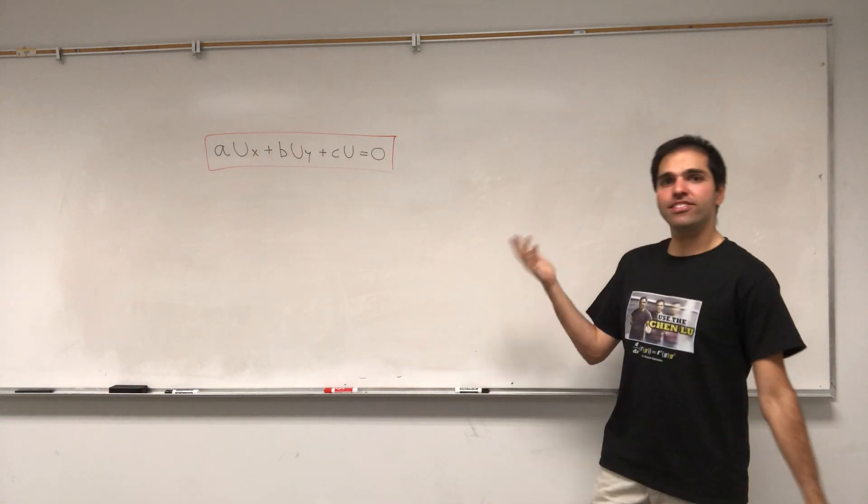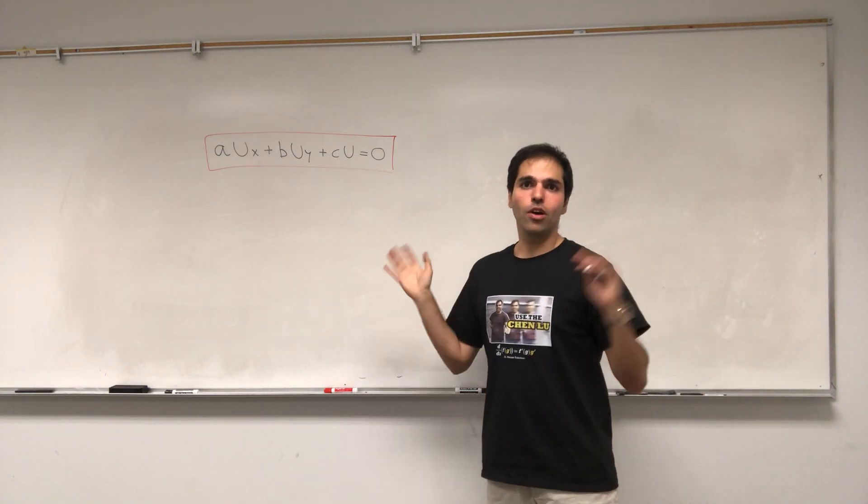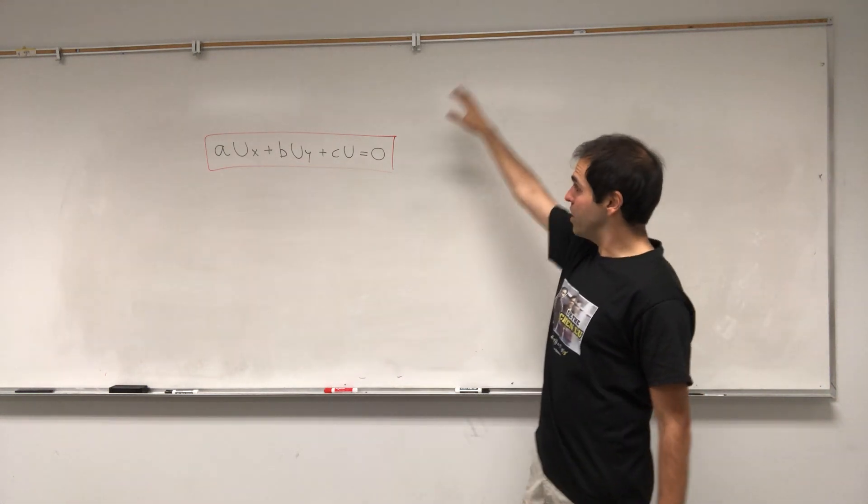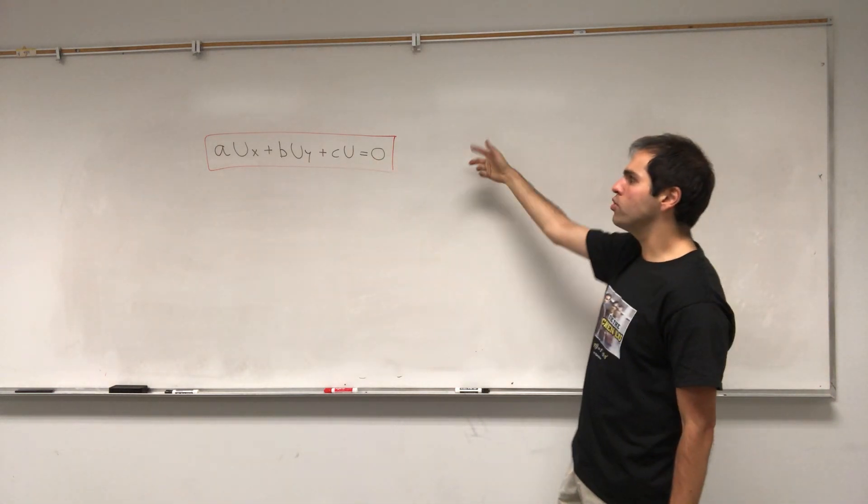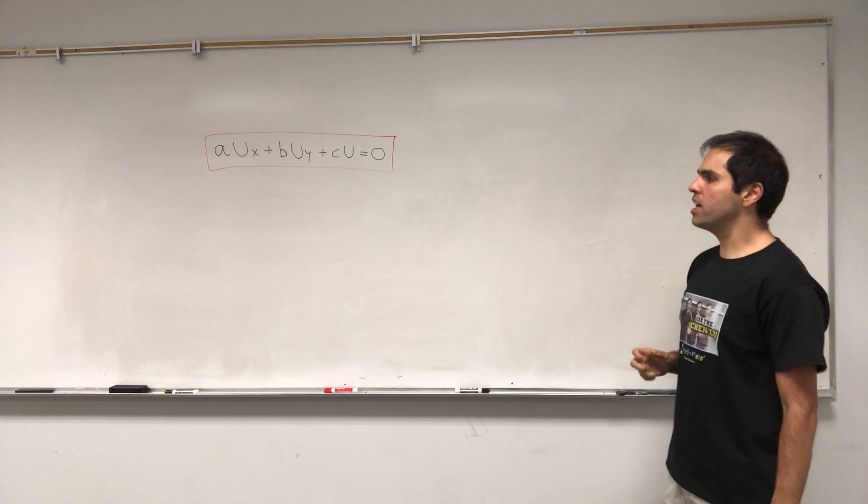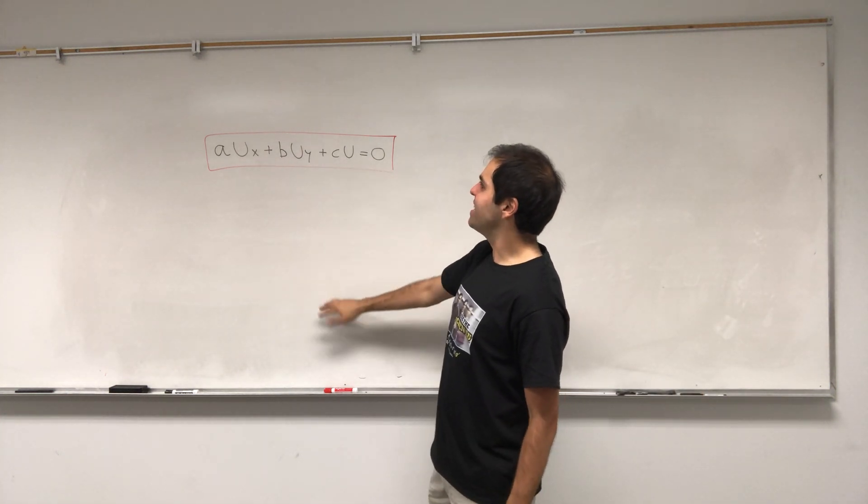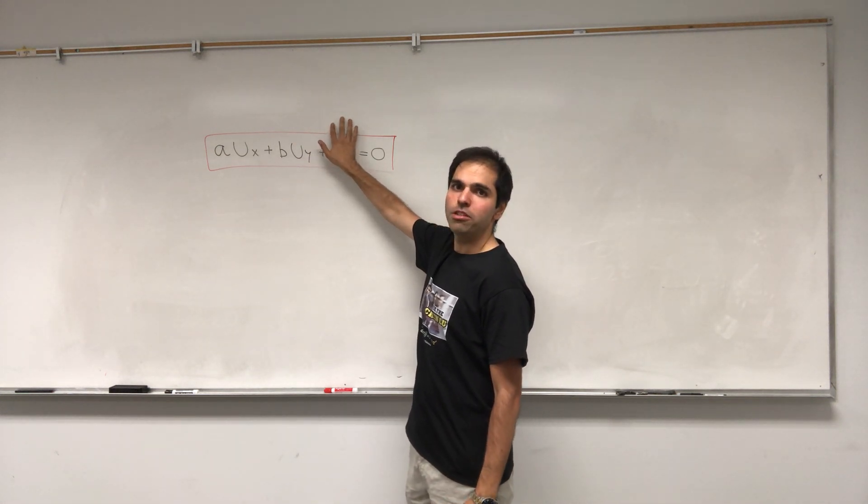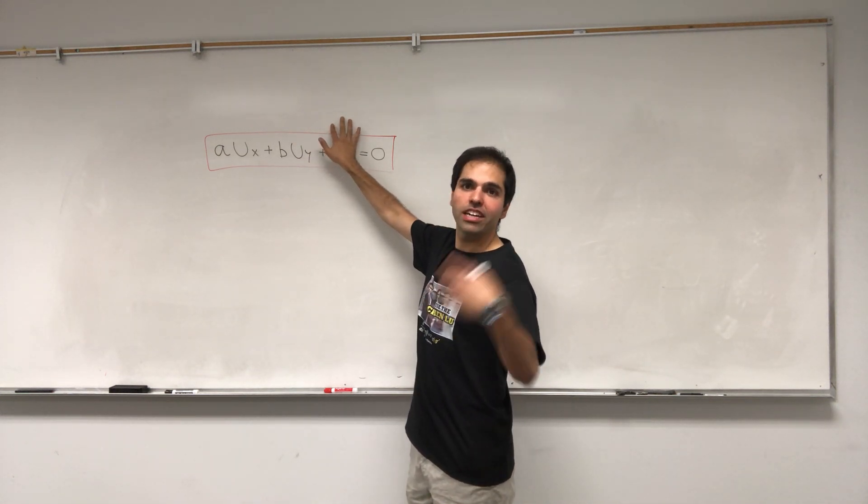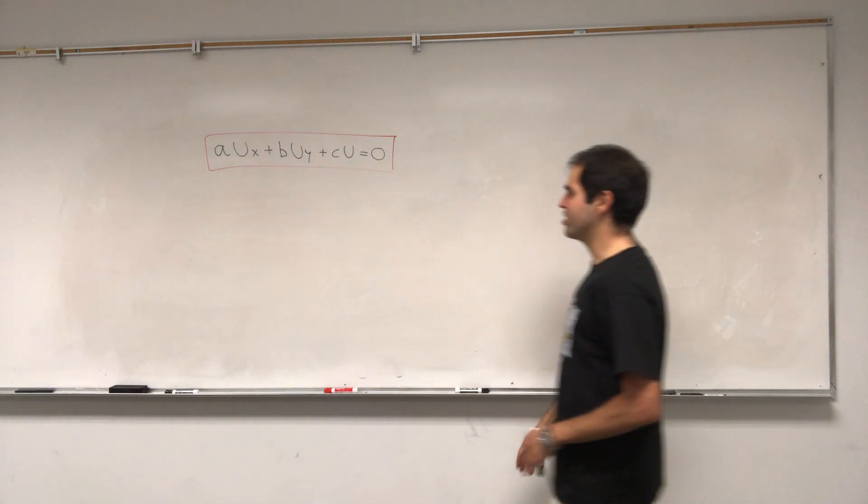And it's very similar to the idea of an integrating factor in ODEs. So for this, let's solve the following PDE: AUx plus BUy plus Cu equals 0. And basically the idea is, if we didn't have the Cu part, everything would be happy, because then we can just use our method for first order PDEs and then just find a solution.